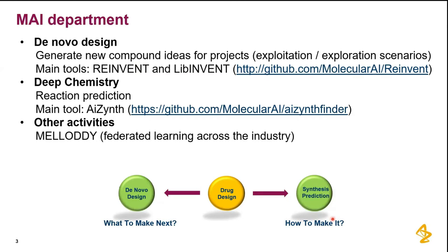The other question is: how to make it. That's something maybe not fully appreciated outside the industry, but it's actually a big problem to synthesize ideas that come out of our idea generation pipeline — the best idea doesn't help if you don't know how to make it. This is what the synthesis prediction or Deep Chemistry team handles. They built a tool called AI Synth that predicts reaction pathways to get to the target compound.